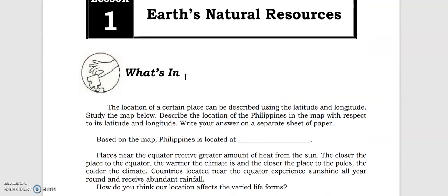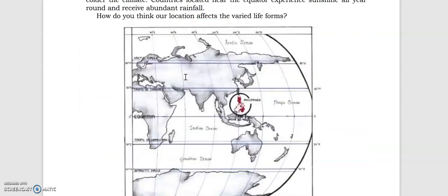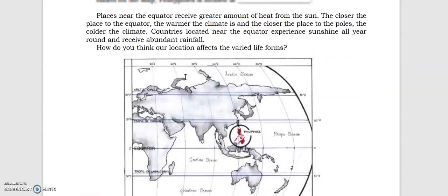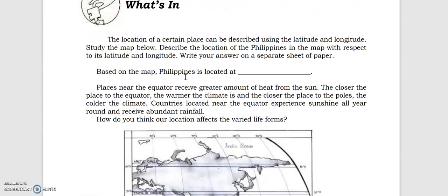Let's just focus on the discussion part. So yes, Earth's natural resources is divided... Basically our location, we're located near the equator and we experience sunshine all year round and we receive abundant rainfall as well. So with this our country Philippines is very rich in natural resources.